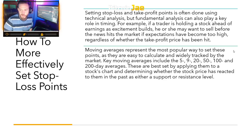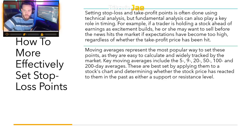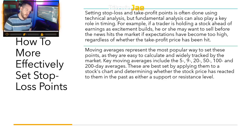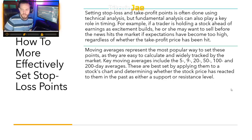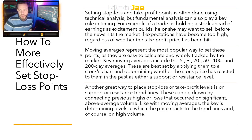Moving averages represent the most popular way to set these points, as they are easy to calculate and widely tracked by the market. Key moving averages include the 5, 9, 20, 50, 100, and 200-day averages. These are best set by applying them to a stock's chart and determining whether the stock price has reacted to them in the past as either support or resistance. That's why we use moving averages on our charts — we usually have about four or five of them. When figuring out where to take profit, you have to look at the history and see where the stock had trouble and why.